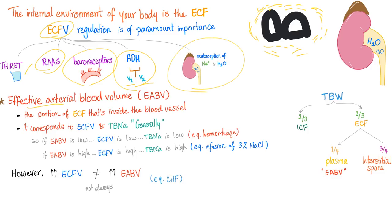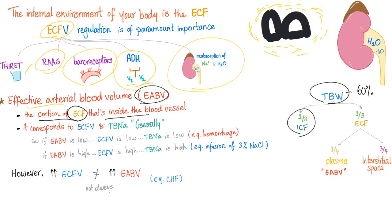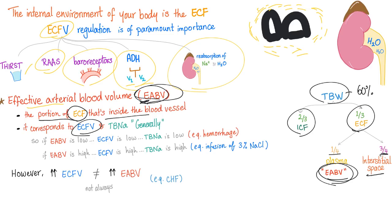There is a concept called effective arterial blood volume. This is the portion of the ECF that's inside a blood vessel. Your total body water is about 60% of your total body weight. Two-thirds of that is in the intracellular fluid and one-third is in the extracellular fluid. Of that one-third, you have one-fourth in the plasma — this is the effective arterial blood volume — and three-fourths are in the interstitial space. This effective arterial blood volume corresponds to the extracellular fluid volume and the total body sodium, generally speaking.